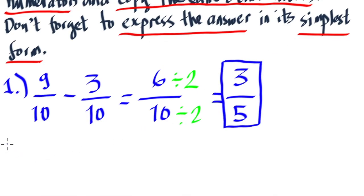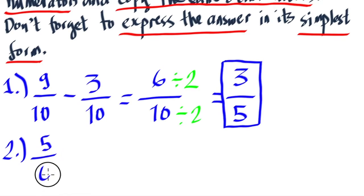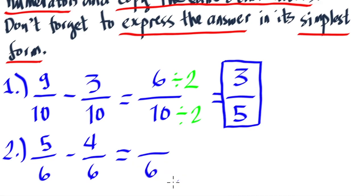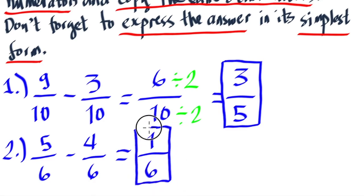For number 2, let's have one more example. Say we have 5 over 6 minus 4 over 6. Clearly, they are similar fractions because they have the same denominators. So, 5 minus 4 is 1 — copy the denominator. Can they be simplified? No, because our numerator is already 1, so that's the simplified form: 1 over 6.